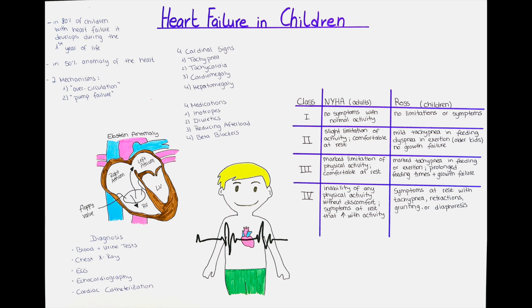80% of the children that develop heart failure develop it during the first year of childhood, and in 50% of those it is due to a congenital anomaly of the heart. In the others it is an acquired condition that damaged the heart.